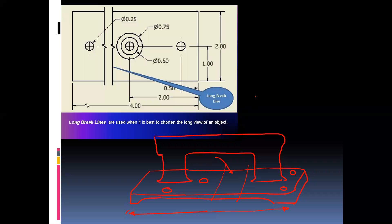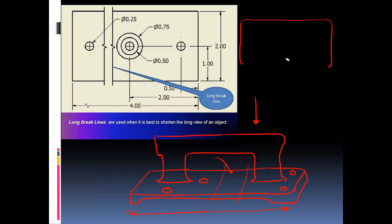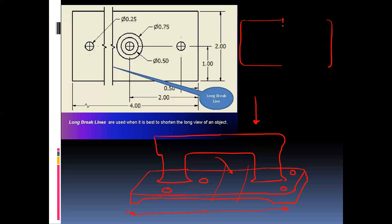If we observe this foundation from the top direction, we can observe a rectangle like this. But we are removing this portion so that we can fit the given view on the paper. To remove this portion, we can break this view and show this exact zigzag line.